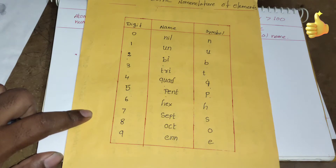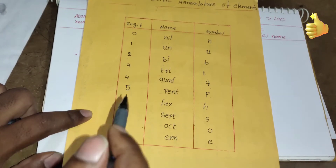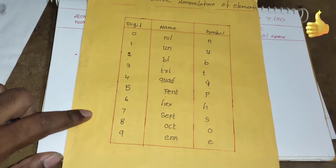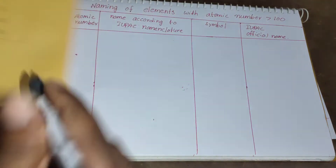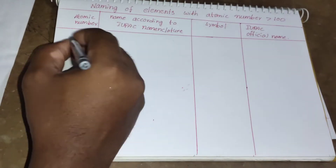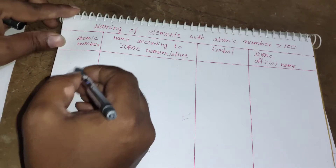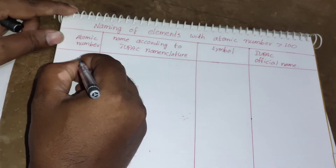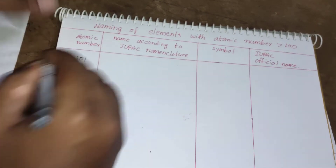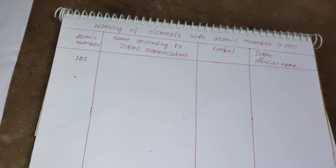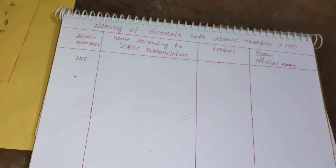Using these nine digit names, we can name any element with atomic number greater than 100. Let me take element 101 as the first example to show how this naming works.